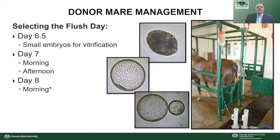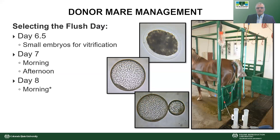For donor mare management, the reproductive management is very similar to breeding a mare to carry with fresh, cooled, or frozen semen. When selecting the day to flush: if you want to cryopreserve an embryo, flush on day six and a half or very early morning of day seven before the embryo starts to expand. The equine embryo enters the uterus either late on day five or very early on day six, so you can't recover it before that. You'd get either a morula or very early blastocyst.